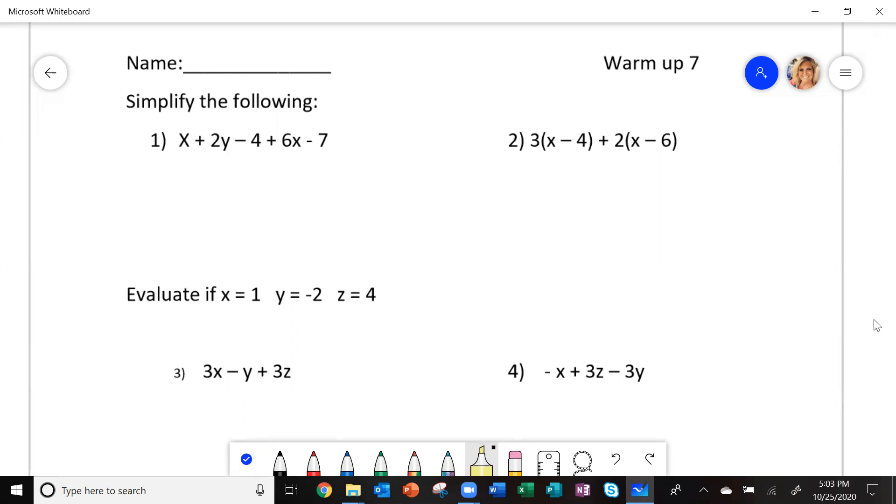So on the first one, it tells you to simplify. When you simplify, it means you need to combine like terms. Put together the things that are the same. So I have an x and a positive 6x. That gives me 7x.